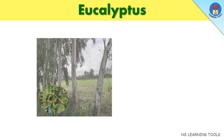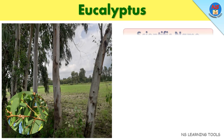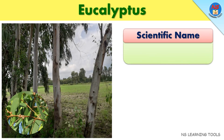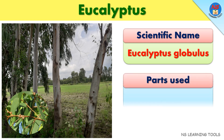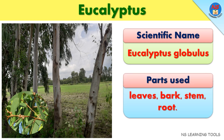Eucalyptus. Scientific name: Eucalyptus globulus. Parts used: Leaves, bark, stem, root.